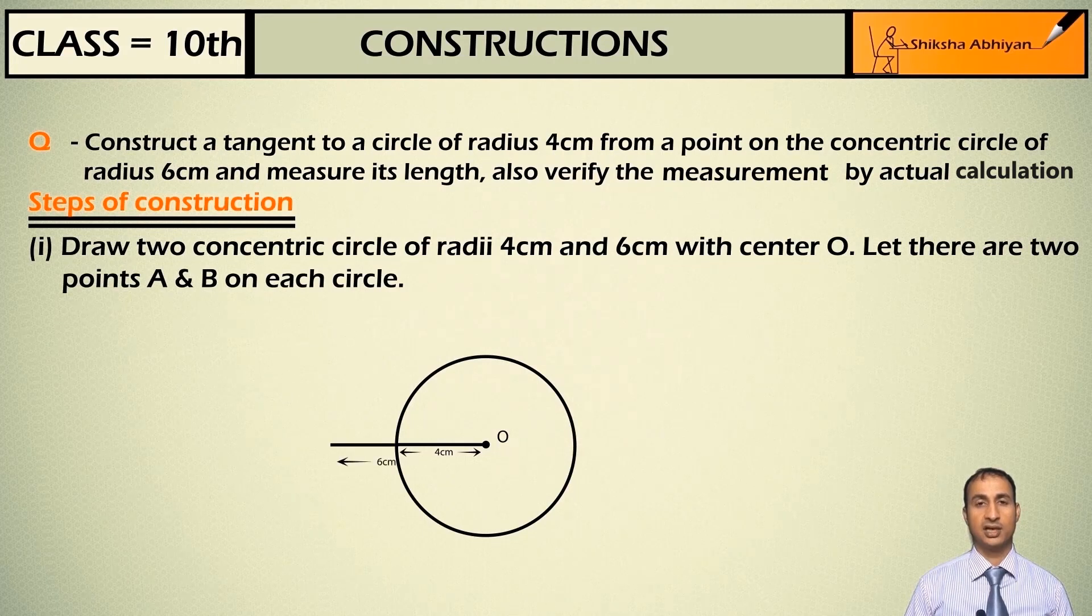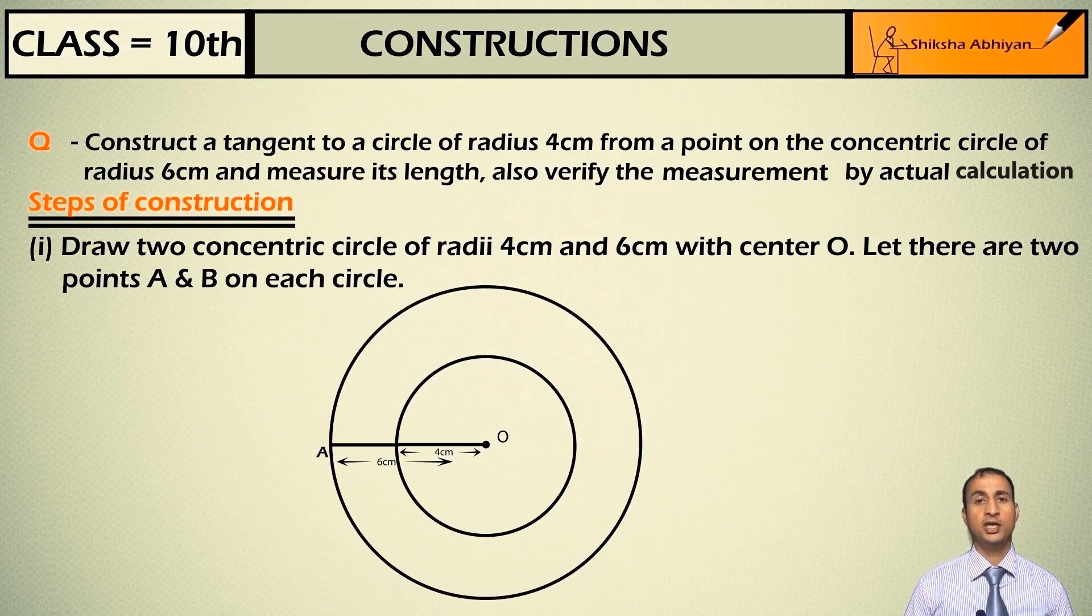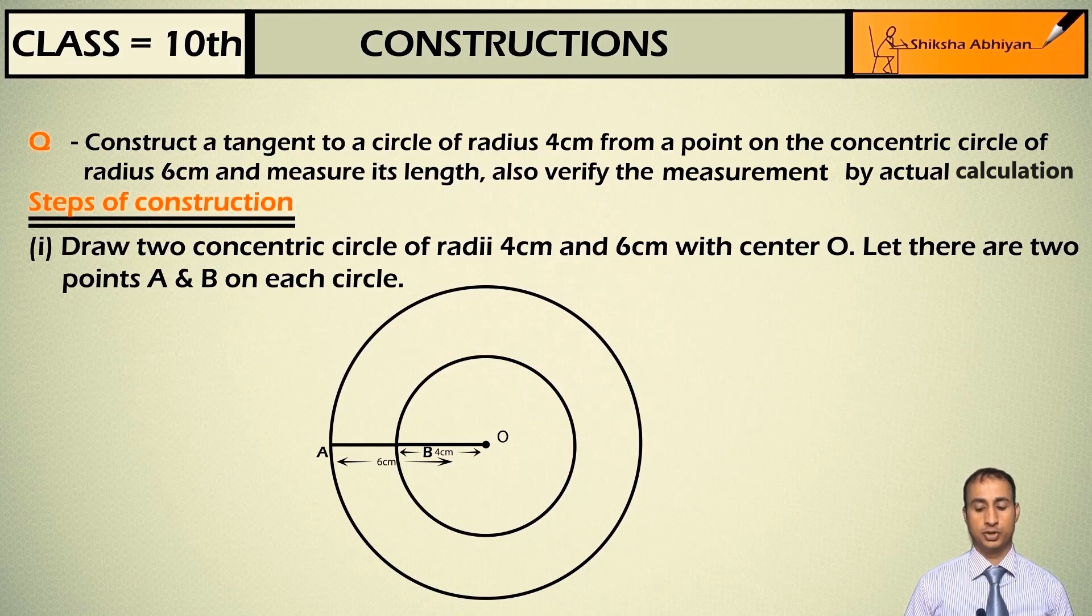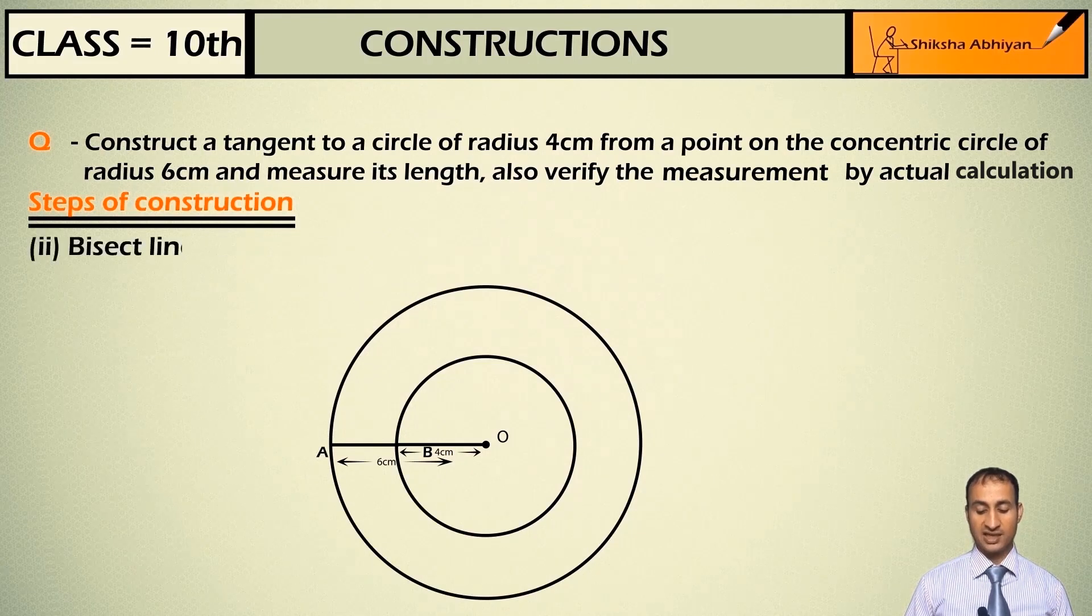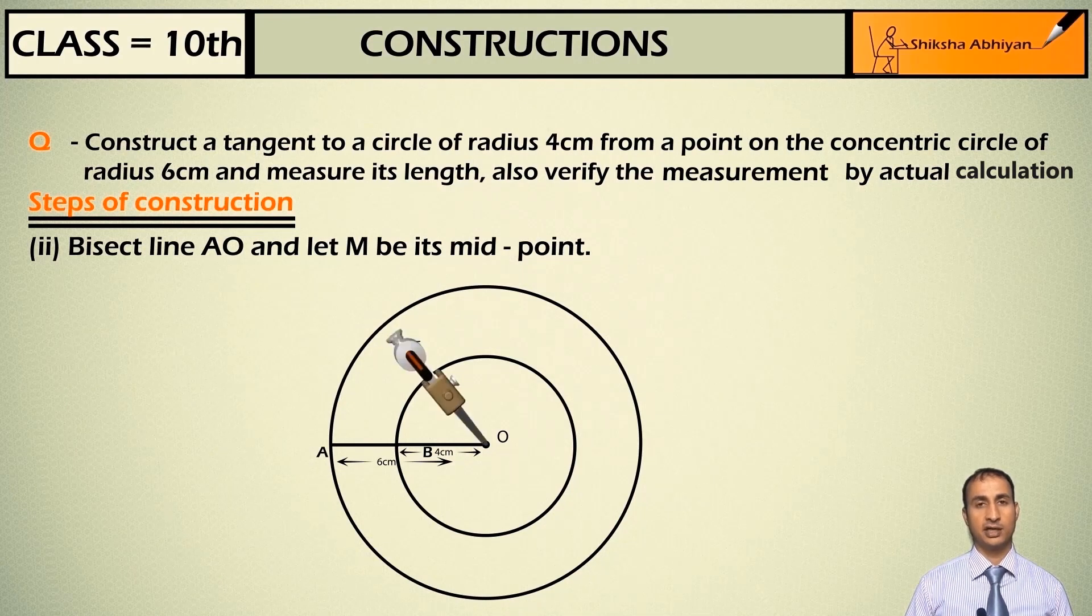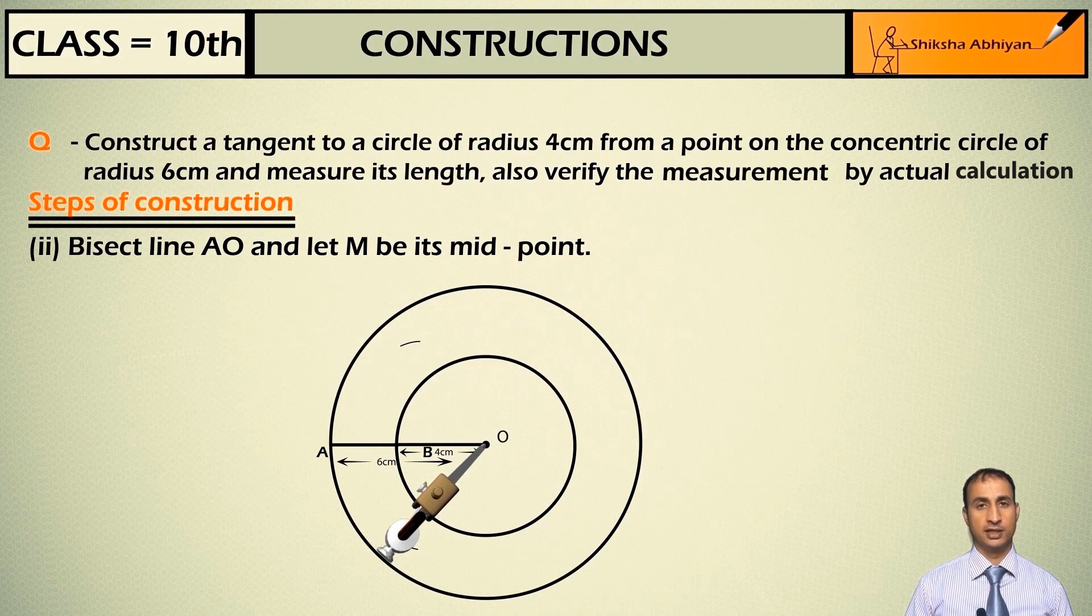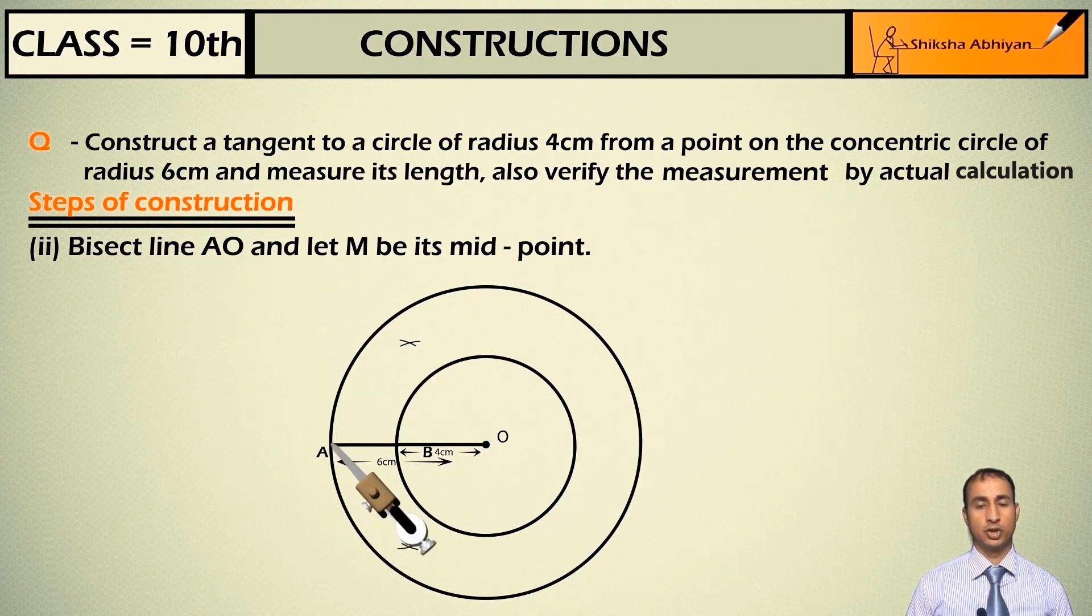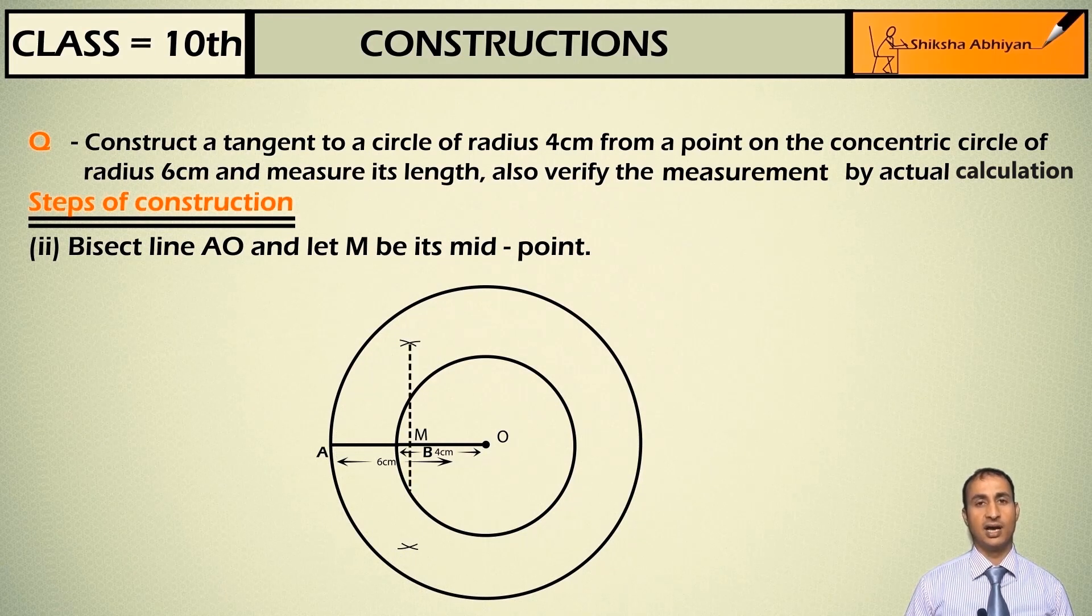This is the center O, this is radius 4 cm, draw the circle, 6 cm draw the circle. Now this is point A, point B, join this A, B, O. Now students bisect line AO. Let M be its midpoint. To bisect, take more than half the arc above and below, and cut them. Now join. This is M, M is the midpoint.